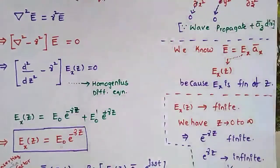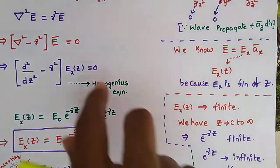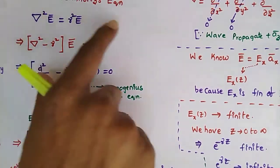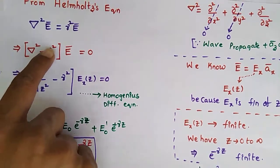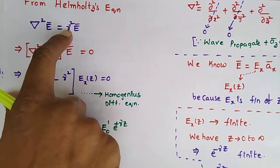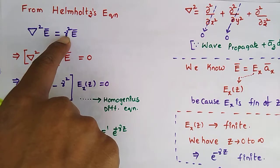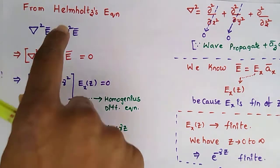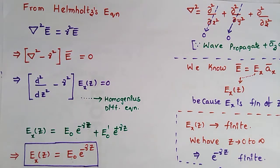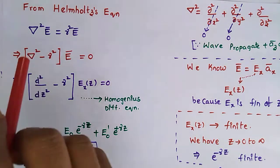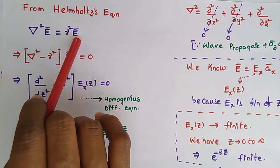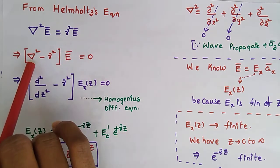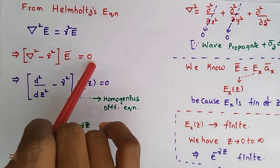Next, we need to know Helmholtz's equation: del-squared E-bar equals gamma-squared E-bar. Rearranging: (del² − γ²) Ē = 0. Here gamma is the propagation constant, where gamma equals alpha plus j-beta. Alpha is the attenuation constant and beta is the phase constant.